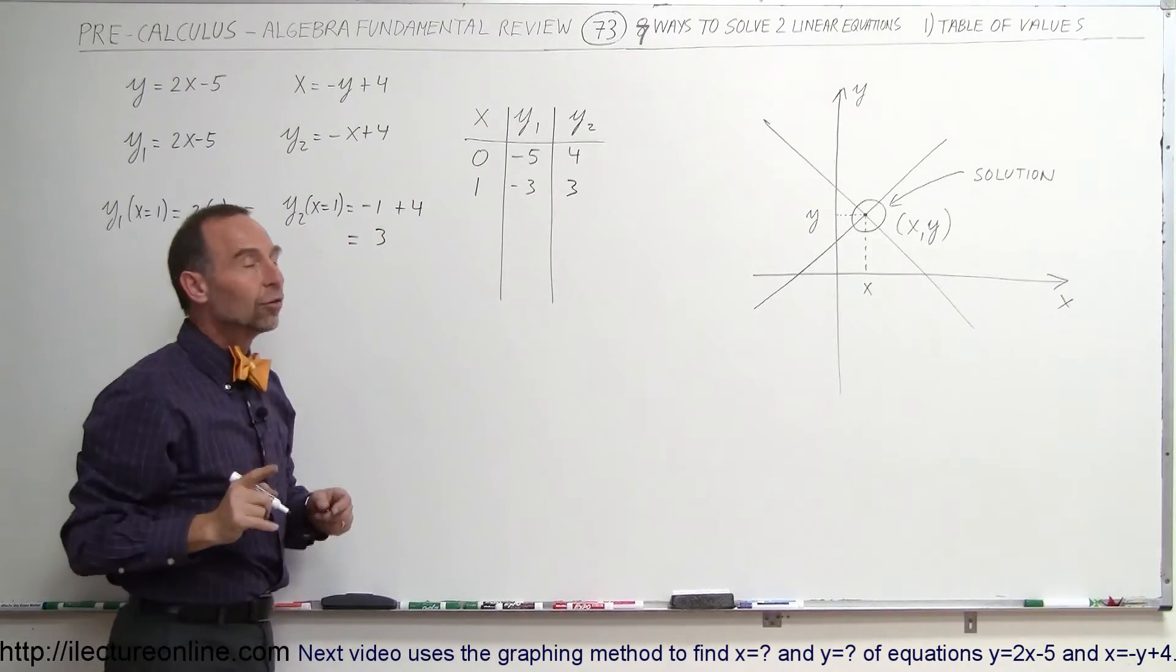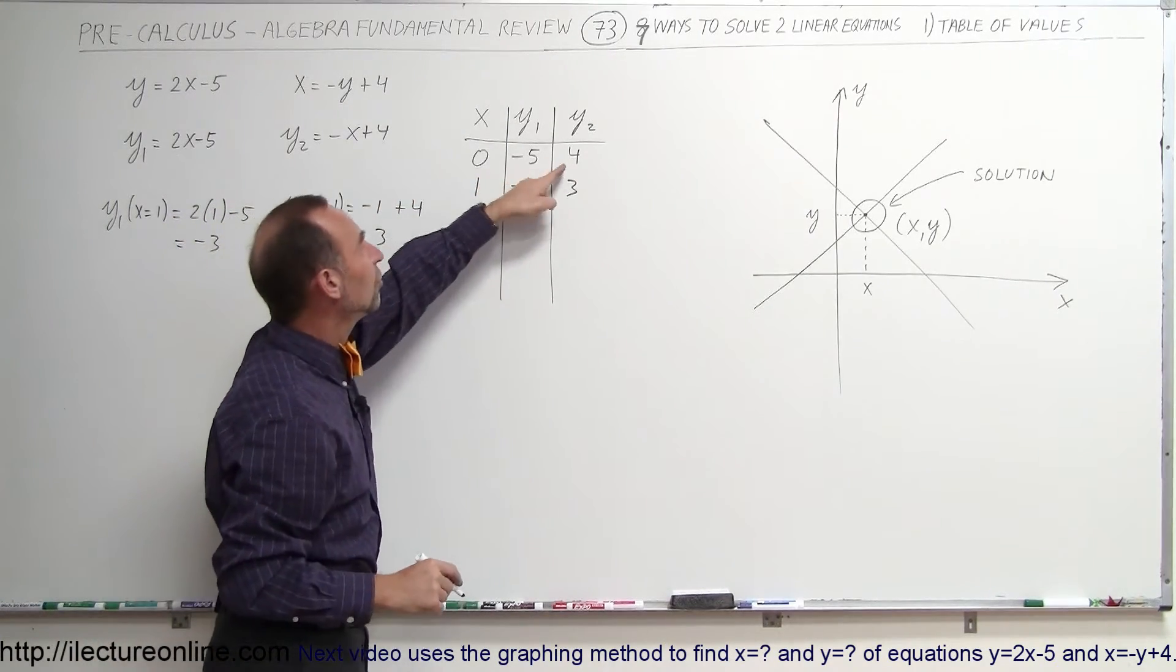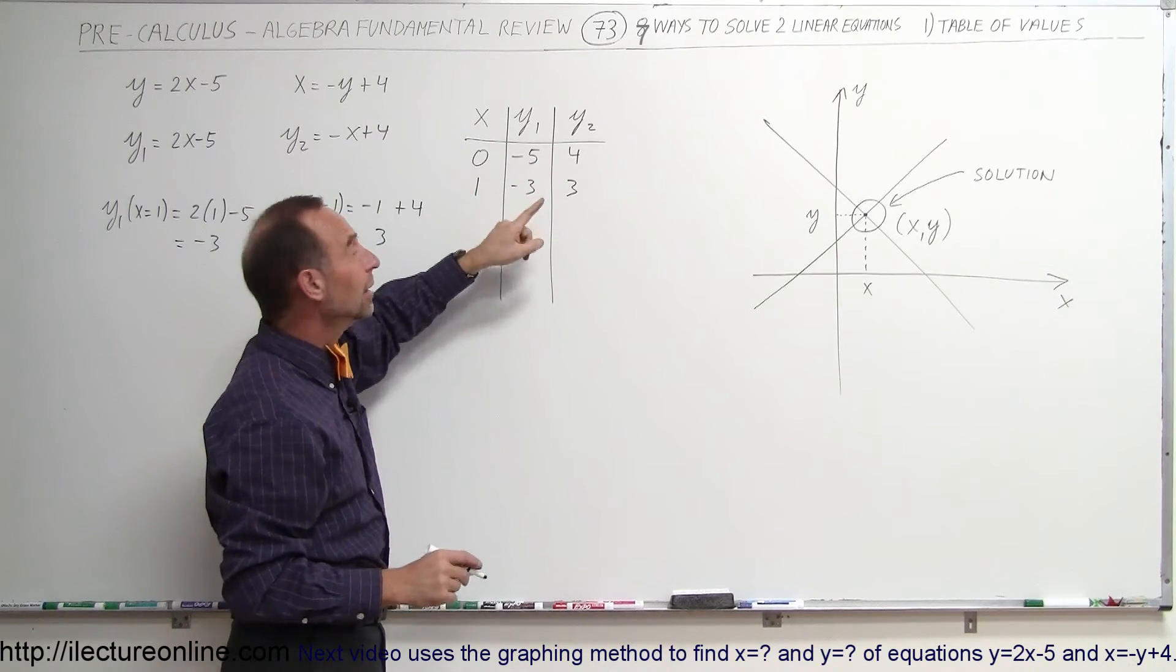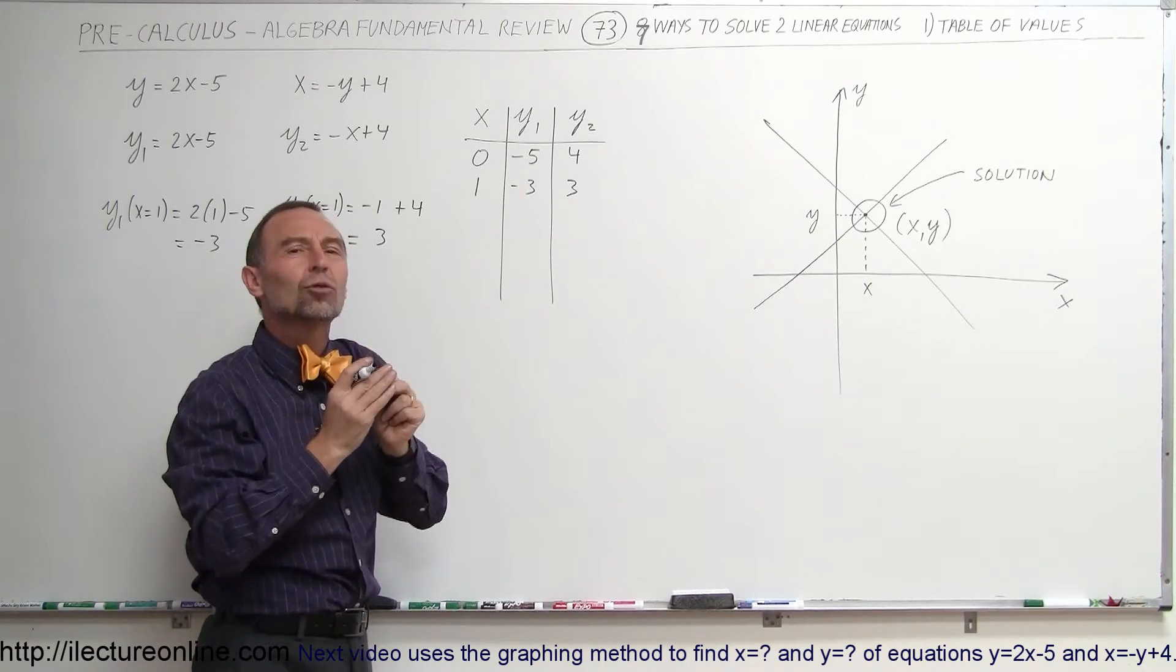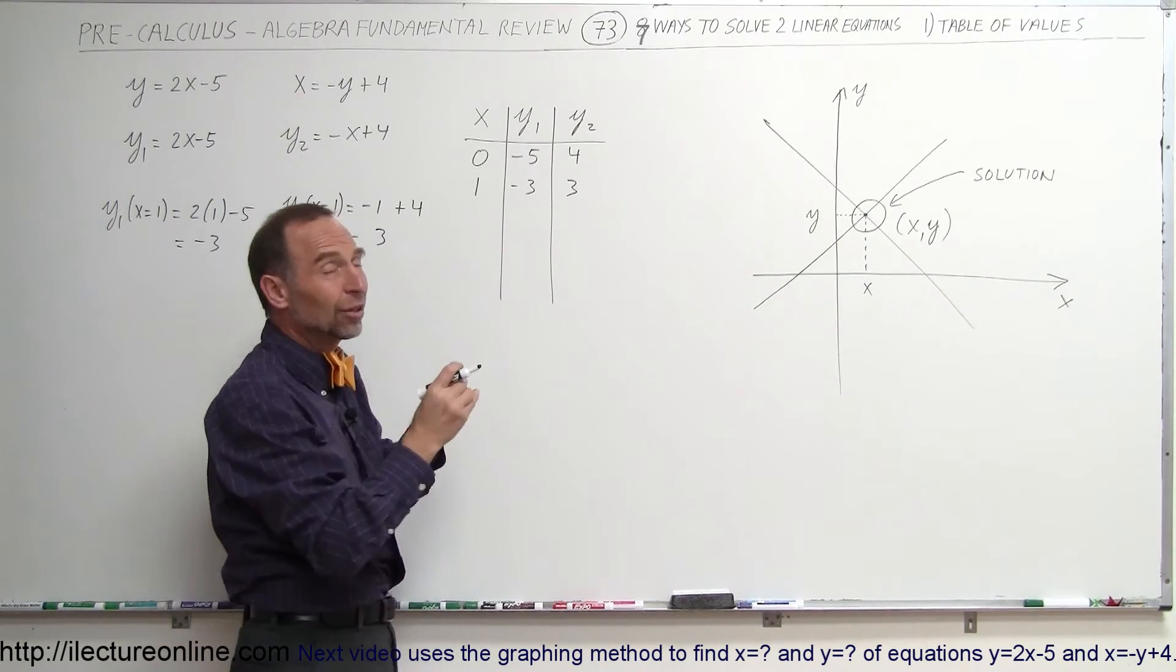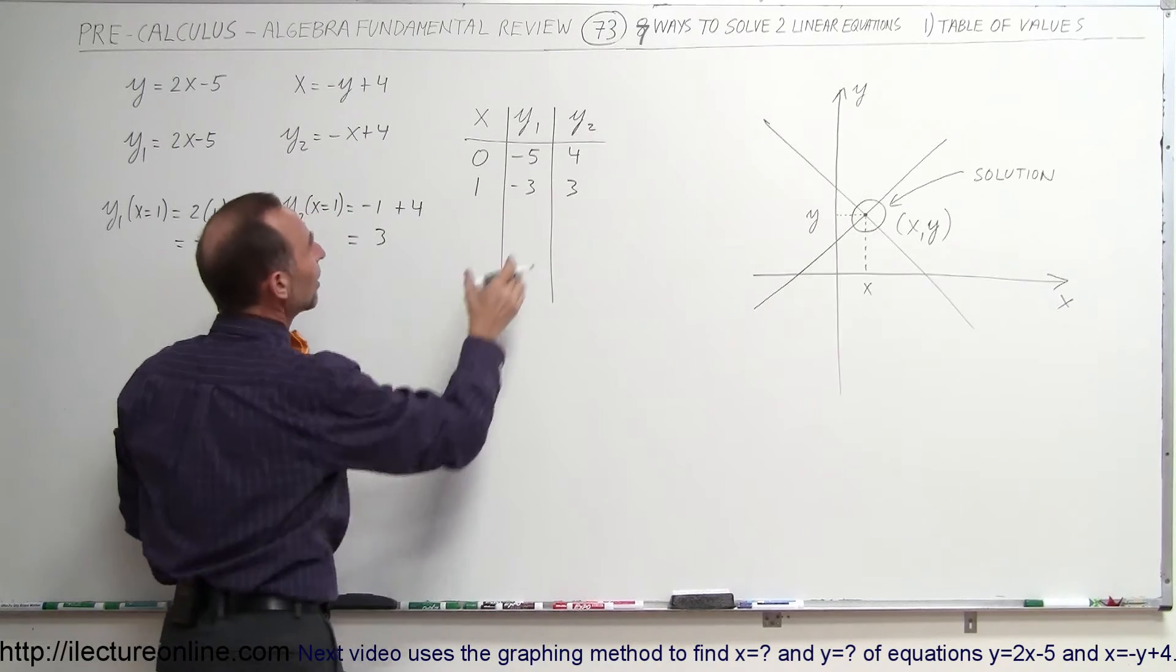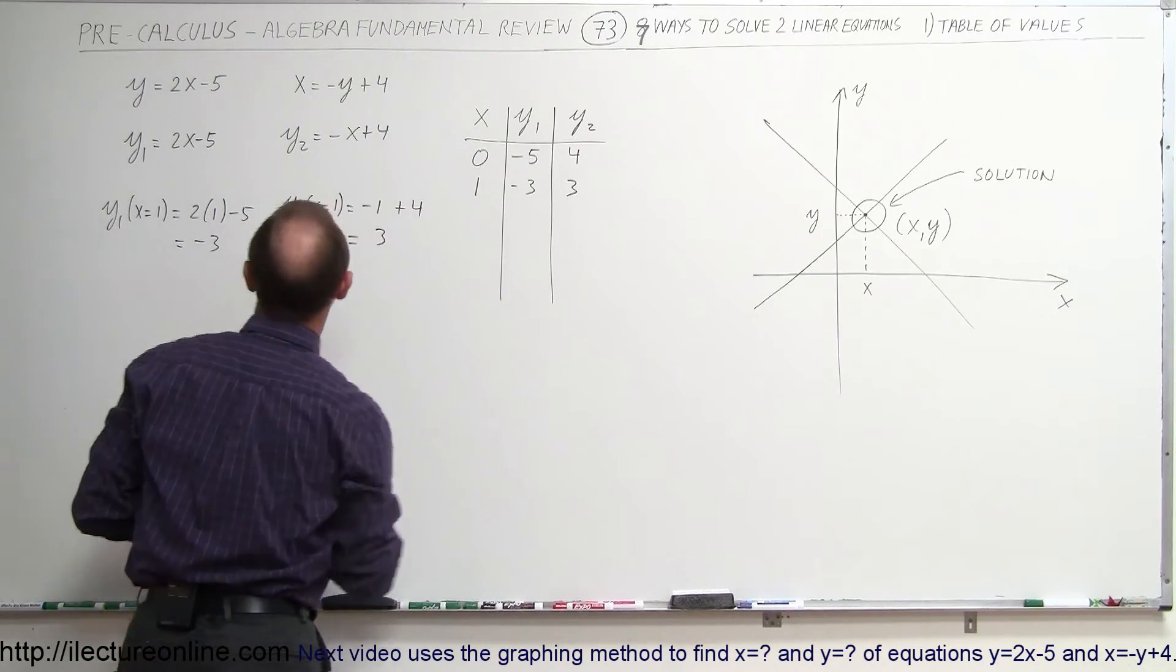Now, here's a good trend. Notice that here there are a distance of 9 units between the y1 and y2 value, and notice now the distance is only 6 units. It looks like we're converging, as we call it. The values are getting closer together, so there's a correct trend here, but they're not the same yet, so I'm going to continue.